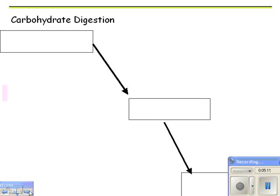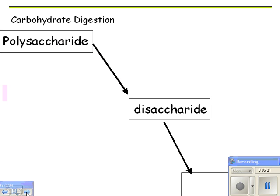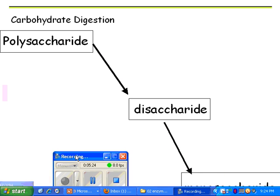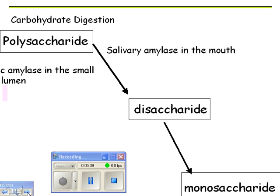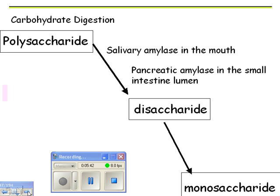Now go back to page two of your notes. You already have that polysaccharides are broken down to disaccharides, which are broken down to monosaccharides. Now we add the enzymes: polysaccharides are broken down in your mouth by salivary amylase — from the salivary glands — and then later in the small intestine with pancreatic amylase. 'Lumen' is just another word for the space inside the small intestine, so you don't need to write that.